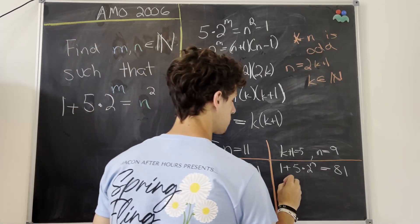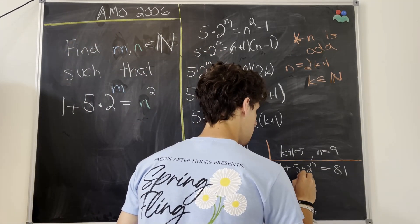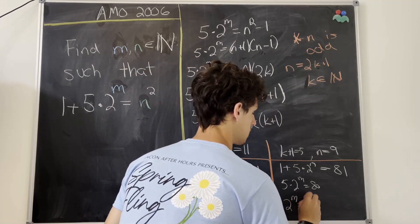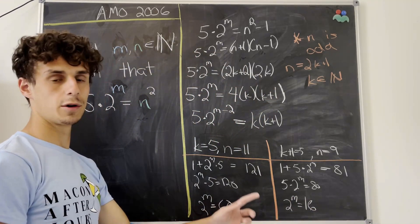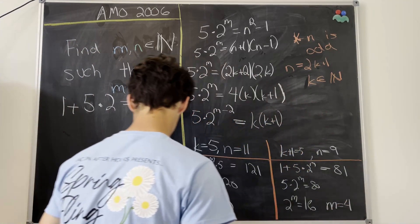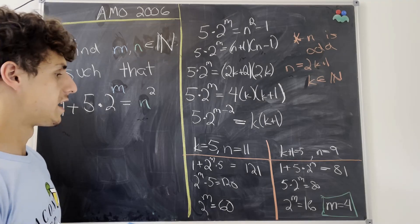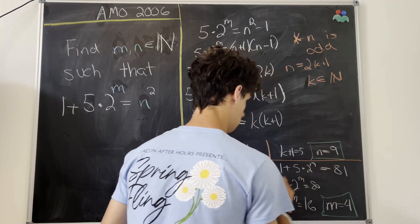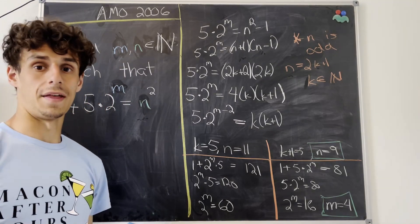Subtracting 1 from both sides, we get 5 times 2 to the m equals 80. And then dividing by 5, we have 2 to the m equals 16. But here we do have a solution where m is equal to 4. So the only ordered pair that satisfies our solution is n equals 9 and m equals 4. And that's enough for now.